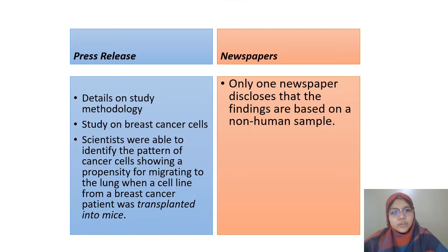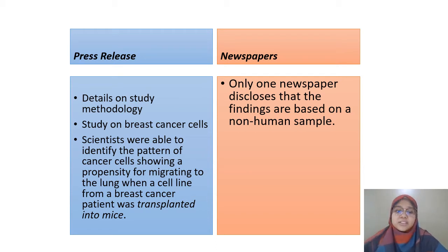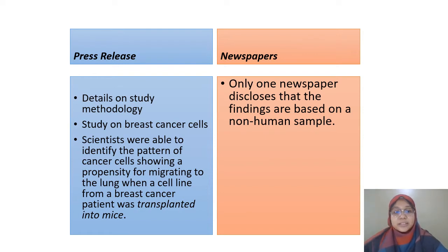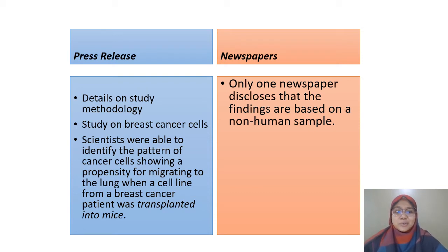On the left, the blue section is a press release produced by a science institution. On the right, the orange part is what has been reported in a newspaper. In the press release, they usually include all the details of the study. For example, it includes the study methodology. This press release is based on a study on breast cancer cells transplanted into mice, where scientists were able to identify the pattern of cancer cells showing a propensity for migrating to the lung.